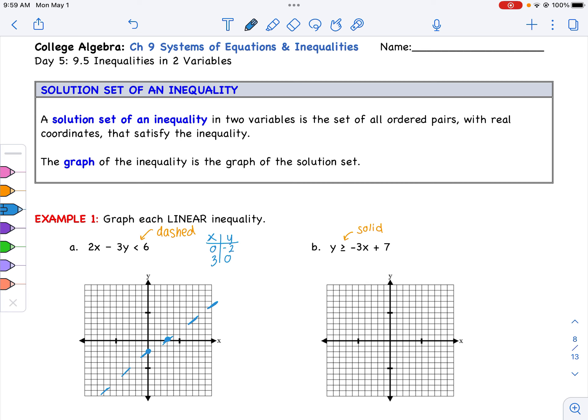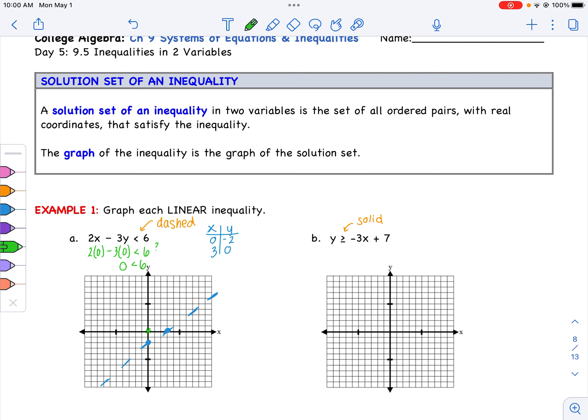And we're almost there. The next part is the shading. Once I have the line, I need to figure out am I shading above or below. So I like to take a test point. I like to test 0, 0, it always seems to be the easiest. If I test 0, 0, which means I plug in 0 for x, 0 for y, I'm seeing is this a true statement? 2 times 0 minus 3 times 0 is 0. Is 0 less than 6? Yes, it is. So that means 0, 0 and everything around it is my answer. And there is your answer for 1a.